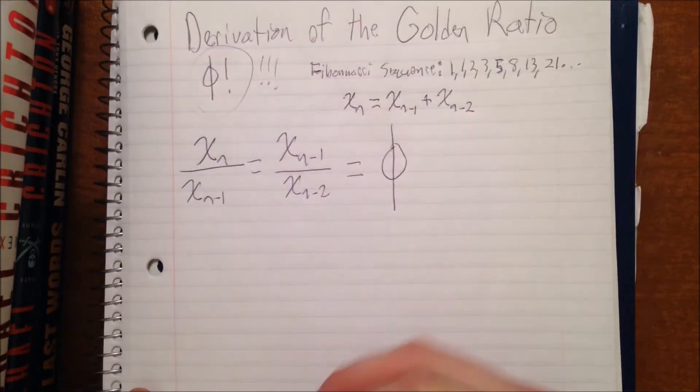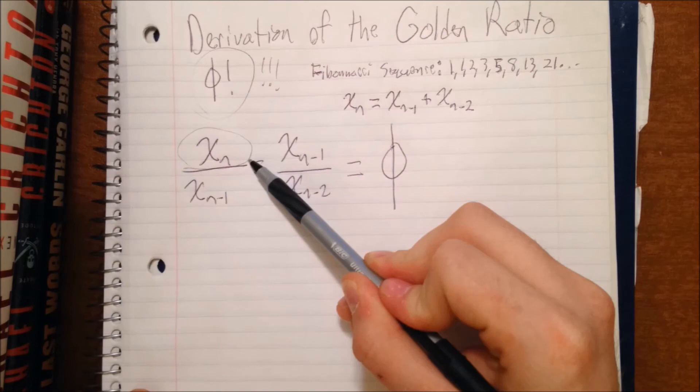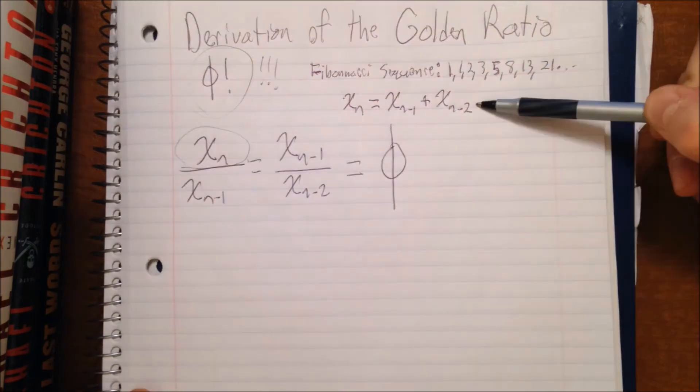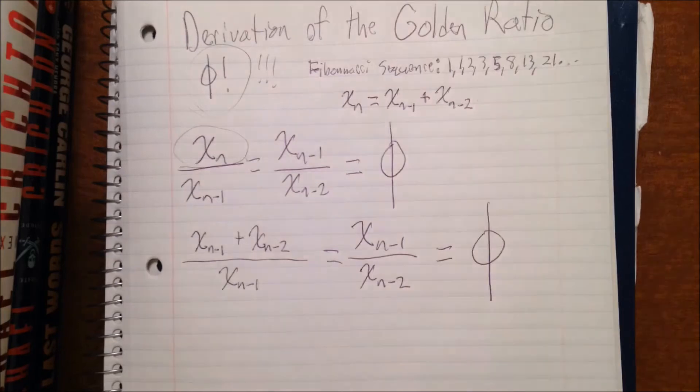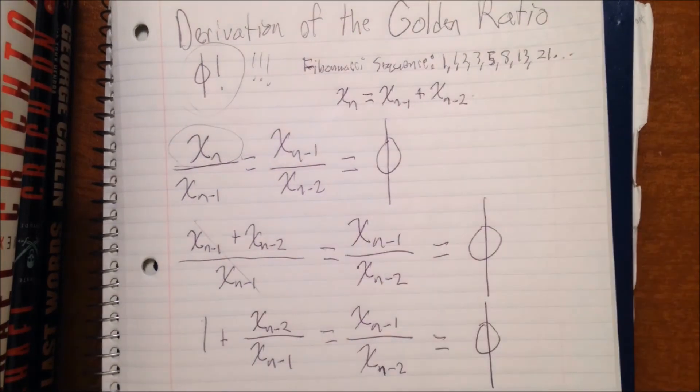Now if you notice, we've got xn over here and an equation that is equal to xn up here, which we can then plug into this equation here to give us a new equation that is equal to phi. That'll be (xn-1 + xn-2) divided by xn-1 is equal to phi. And then we can simplify that a little bit because those xn-1's will cancel, and we get 1 + xn-2/xn-1 is equal to phi.